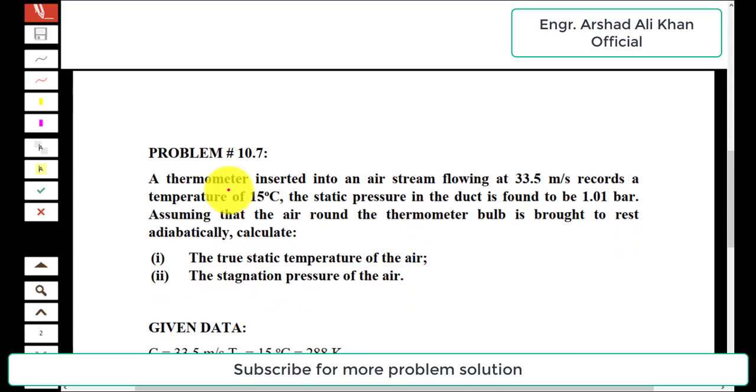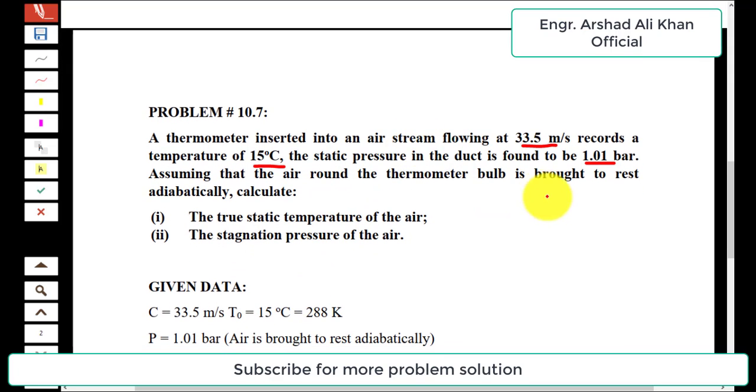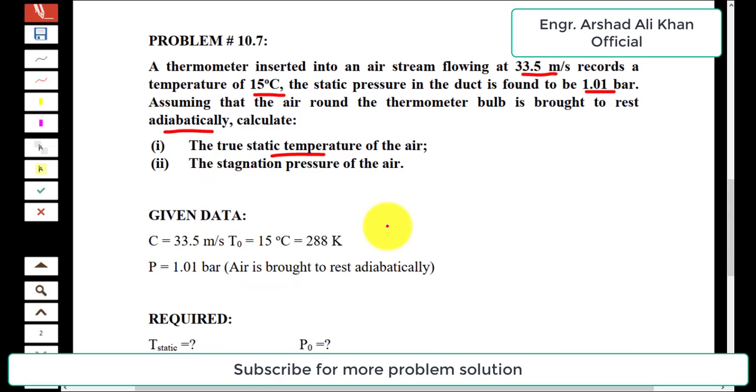A thermometer inserted into an air stream flowing at 33.5 meters per second records a temperature of 15 degrees Celsius. The static pressure in the duct is found to be 1.01 bar. Assuming that the air around the thermometer bulb is brought to rest adiabatically, calculate: (i) the true static temperature of the air, and (ii) the stagnation pressure of the air.